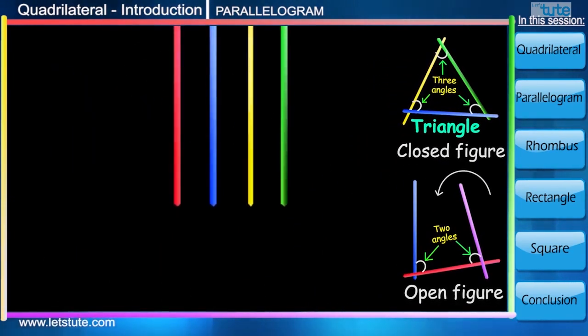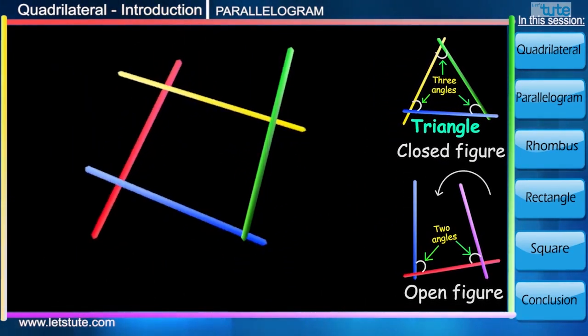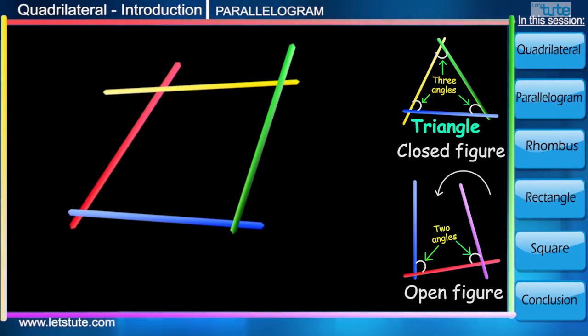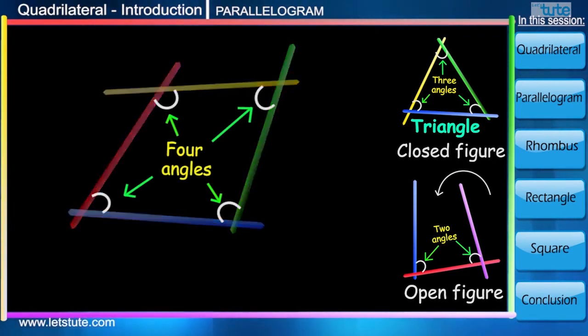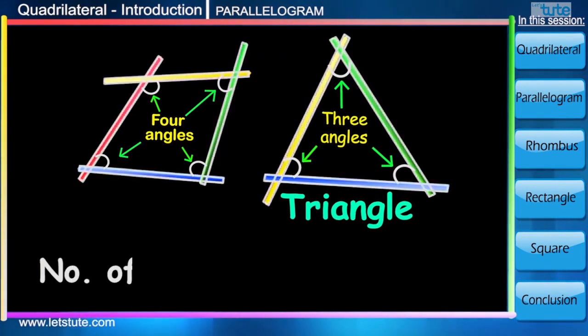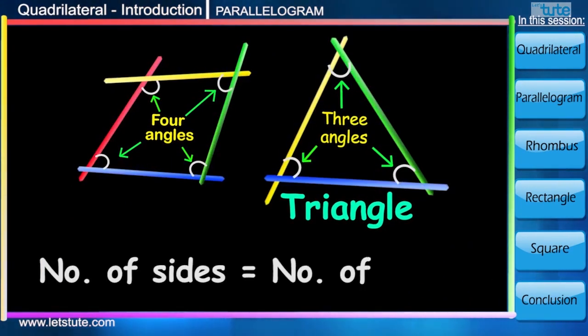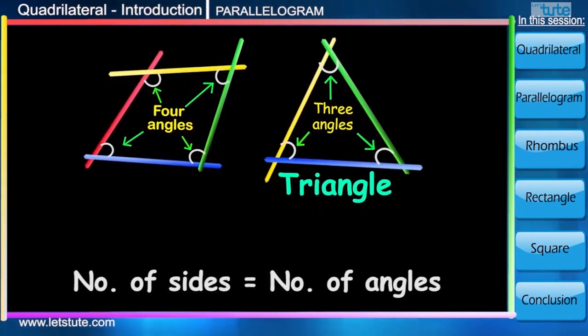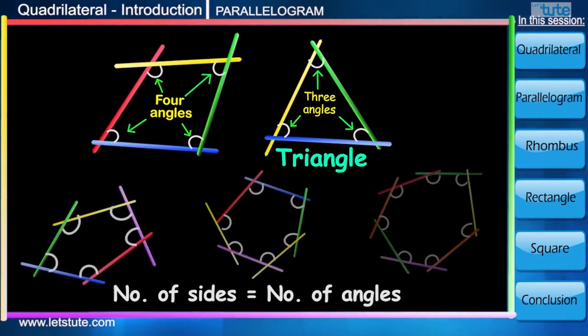Now let's take four sticks and try to form a closed figure. How many angles will it make? It will definitely make four angles. As soon as number of sides increase, number of angles also increase. Please keep in mind one thing. In closed figures, always number of sides equal number of angles. You can try it with any number of sticks: five, six, seven and so on.